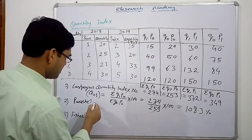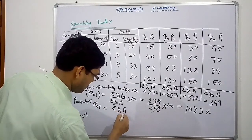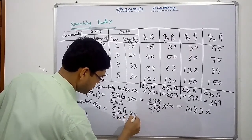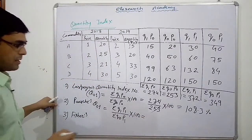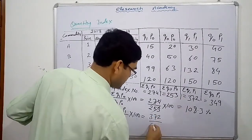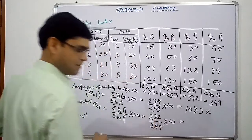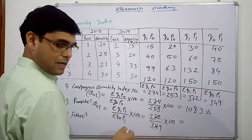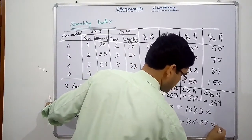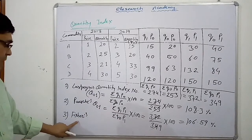Second — Paasche's: Q01 equal to Sigma Q1 P1 upon Sigma Q0 P1, into 100. So this is 372 by 349, into 100. This will give us 106.59%, or 106.6%. So these are our first two quantity index numbers.